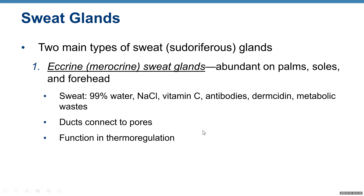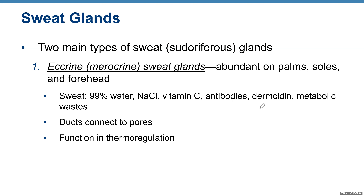We have two main types of sweat glands, also called sudoriferous glands. Eccrine or merocrine sweat glands are abundant on palms, soles, and forehead. They produce sweat that is 99% water and also contains sodium chloride, vitamins, antibodies, metabolic waste, and some chemicals with antibacterial properties such as dermcidin. Sweat glands produce their secretion inside a secretory unit and deposit it to the surface of the skin through a duct that connects to pores. Their function is thermoregulation of your body.